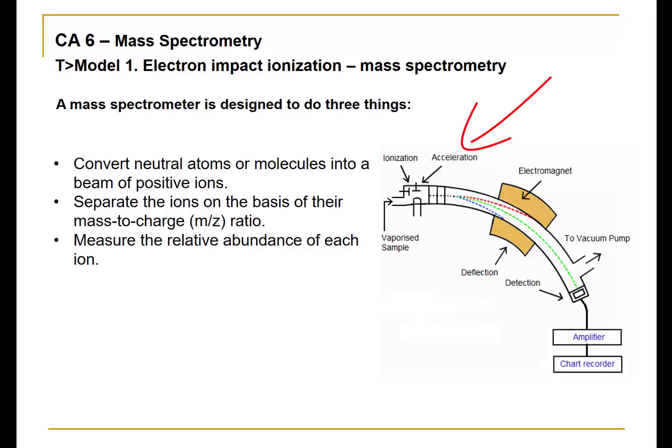Any residual cations are then accelerated down a tunnel by an electric field. A vacuum is applied to the tunnel so as to minimize interference from other gaseous molecules, such as molecular nitrogen and oxygen in the air.